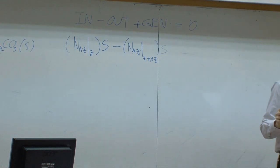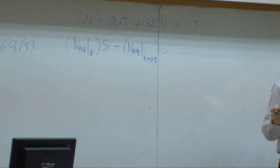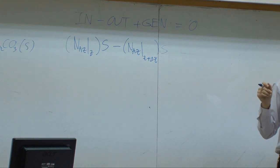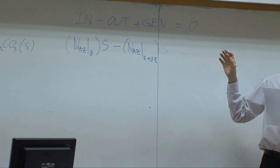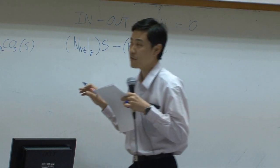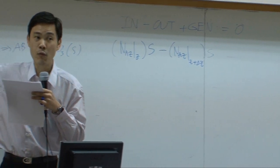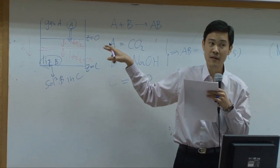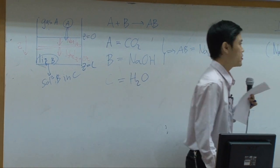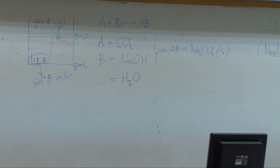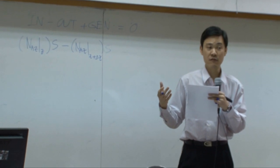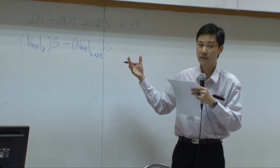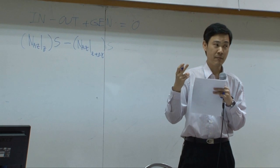Taking the shell balance — in minus out plus generation equals accumulation, which is zero at steady state. The input is the flux N_Az at z multiplied by cross-sectional area S, and the output is N_Az at z plus delta z times S. Is there any generation? Is the generation term zero? In order to answer this, you need to consider whether there is reaction within the shell — in this case there is, so generation cannot be zero.